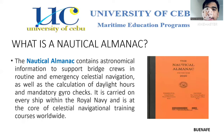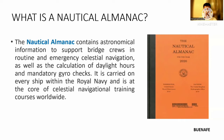For the next reporter is Cadet Buenafé. We're going to define what is a nautical almanac. The nautical almanac contains astronomical information to support bridge crews in routine and emergency celestial navigation, as well as the calculation of daylight hours and mandatory gyro checks. It is carried on every ship within the Royal Navy and is at the core of celestial navigational training courses worldwide. Basically, a nautical almanac is a publication describing the positions of a selection of celestial bodies for the purpose of enabling navigators to use celestial navigation to determine the position of their ship while at sea.